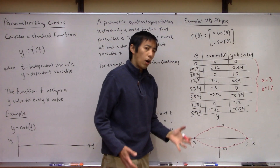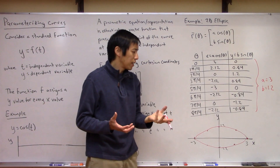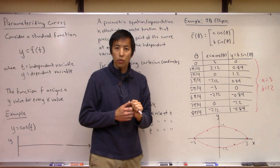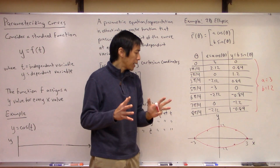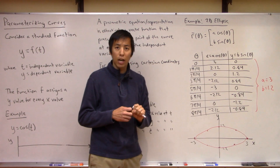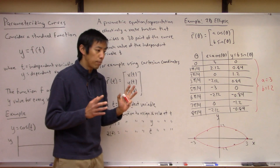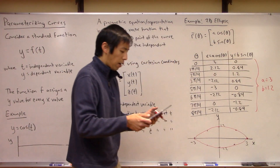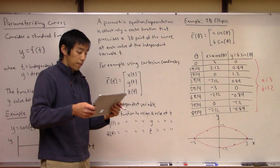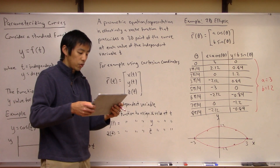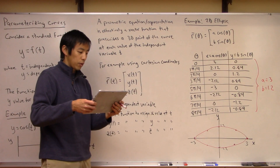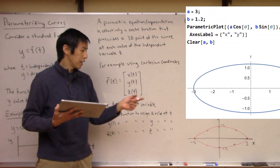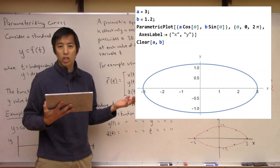So a parametric representation is going to allow us to describe these more complicated curves with individual equations. Mathematica actually has a really great function that's going to help you with this — it's called ParametricPlot. You can plot this directly in Mathematica. Here's an output of what that looks like, and you can see it's just like what we sketched on the board.